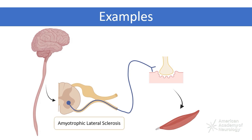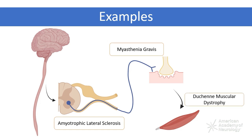Amyotrophic lateral sclerosis, ALS, leads to respiratory weakness via dysfunction of the anterior horn cells. Myasthenia gravis can cause respiratory insufficiency by its effects on the neuromuscular junction, and Duchenne muscular dystrophy weakens the respiratory muscles directly.